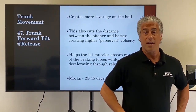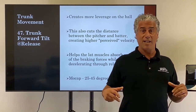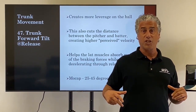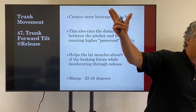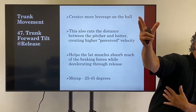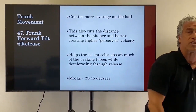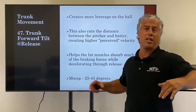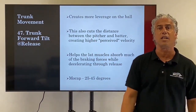Assuming that anterior pelvic tilt is good and thoracic extension is good, when we get out front this will help the lat absorb a lot of the deceleration of the arm instead of the arm just slamming shut.